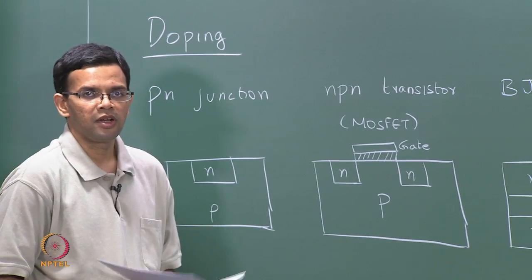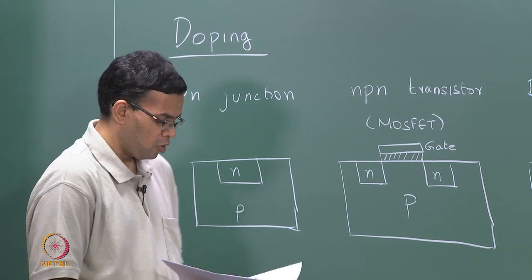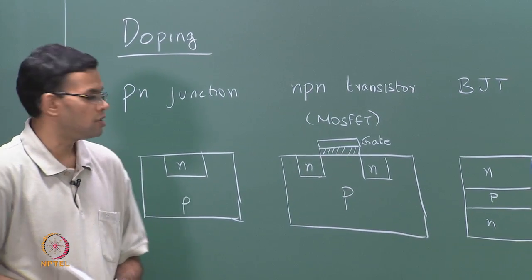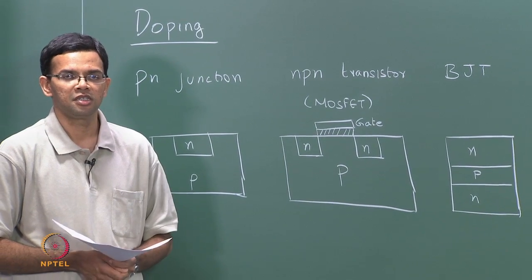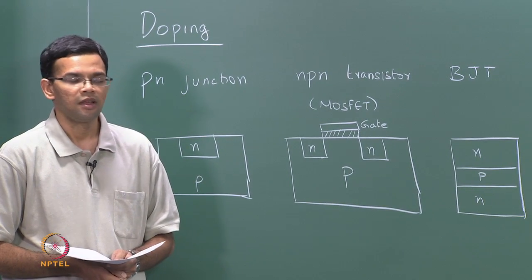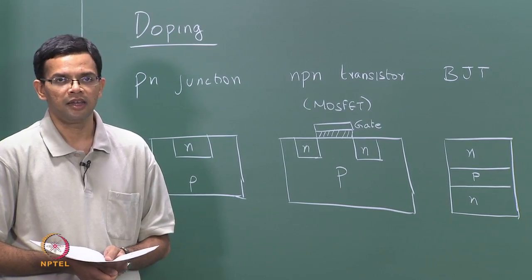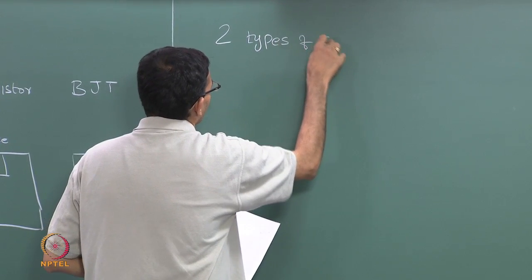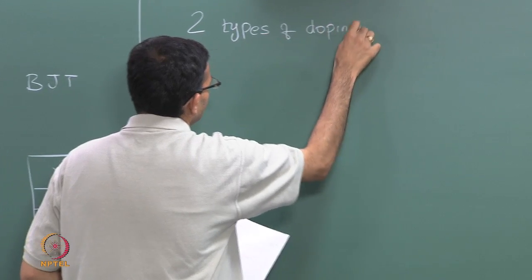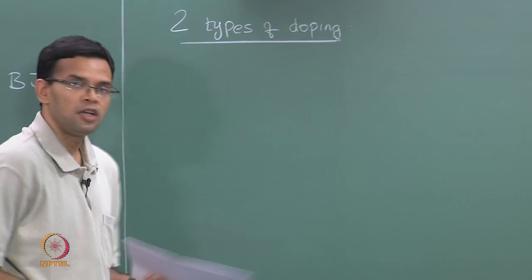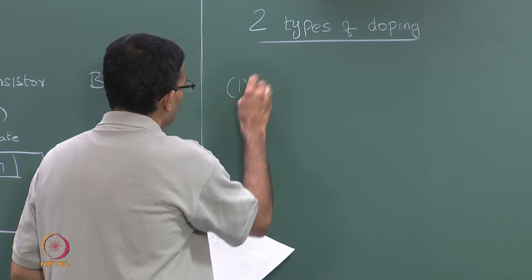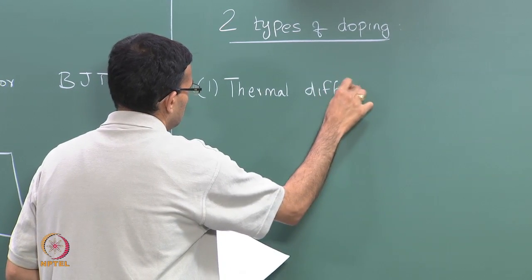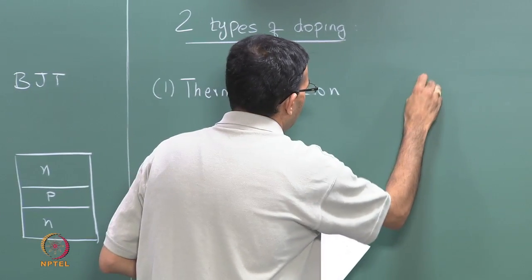In these regions you could have different dopant concentrations. The important point is that doping is a critical step in IC manufacturing because it is used to establish the different junctions that ultimately form your device. There are essentially two ways doping is carried out: thermal diffusion and ion implantation.